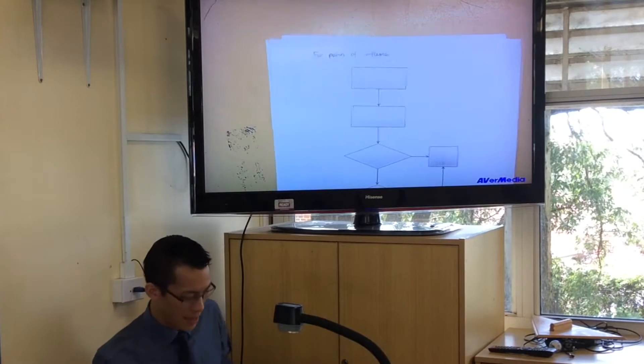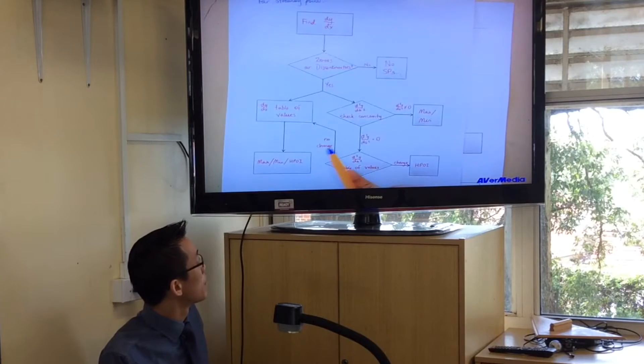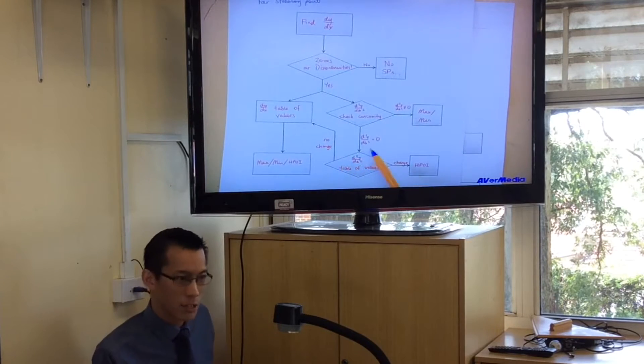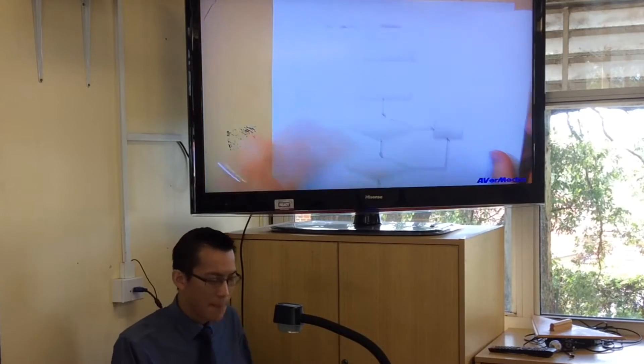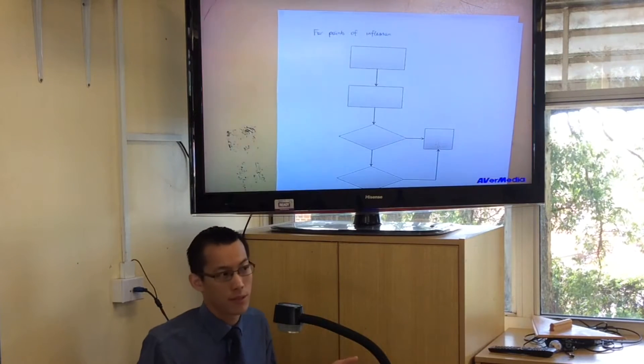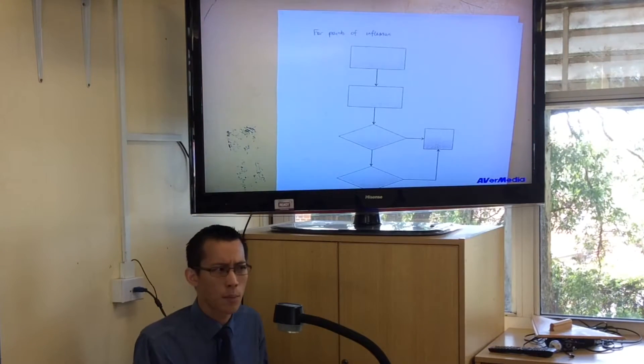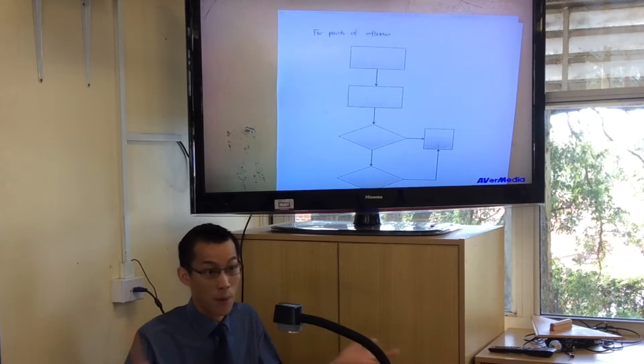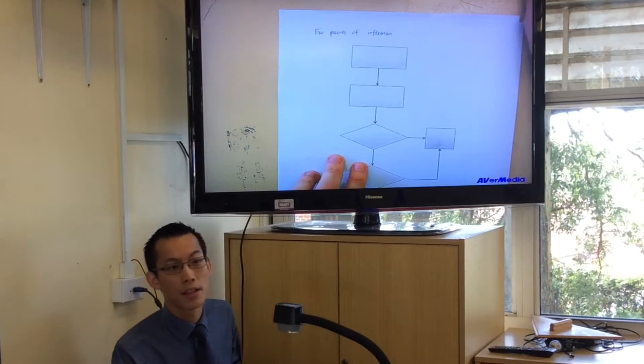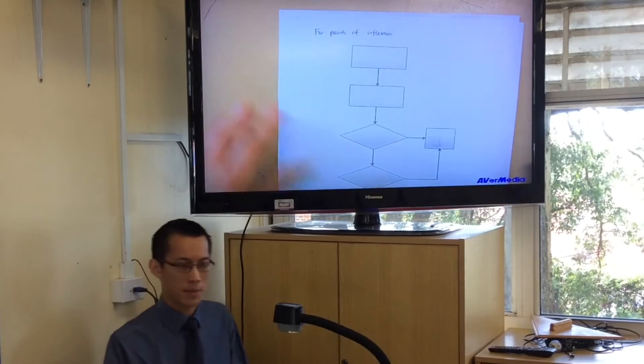It's not just random that sometimes I do a table of values and sometimes I don't. There's good reasons for it. This is what happens if the question just says find points of inflection. You don't need to determine the nature of a point of inflection. It's just a point of inflection. So that's why this is rather less complicated, but there are still a few steps to it.